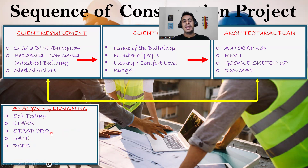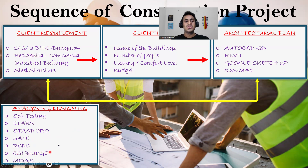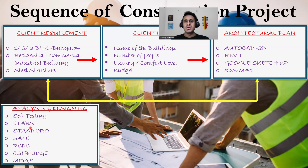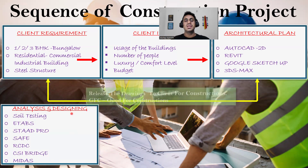You can use ETABS or StaadPro for RCC structures. For foundation design you can use SAFE software, and RCDC for detailing. For bridge construction there's CSI Bridge or MIDAS software. For RCC structures, ETABS is good. But your fundamentals must be strong — just learning the software from random institutes won't make you a structural design engineer. You should know at minimum what kind of column to provide for a G+1 building.